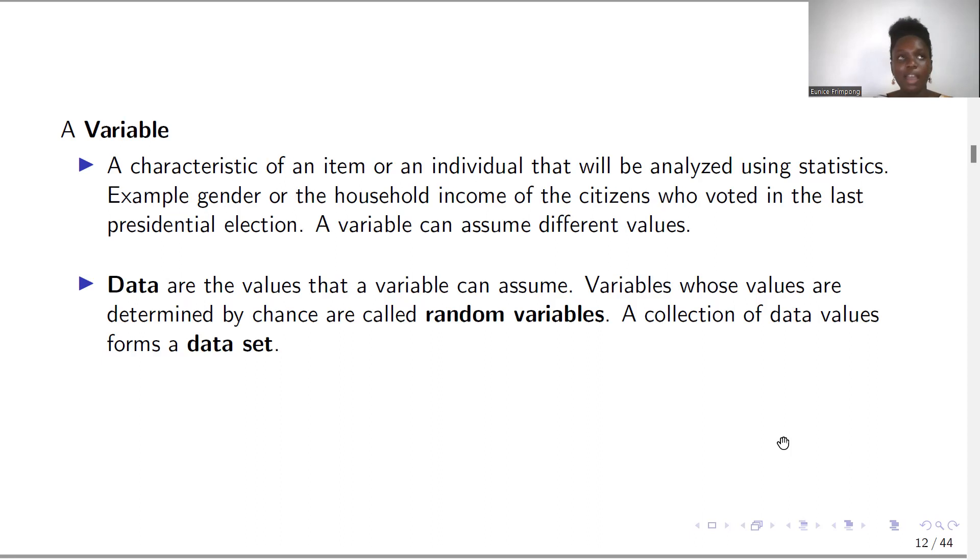So a variable can take on varied values because if I take an individual, his age can be anything. His age can be between 0 and 120. If I'm looking at children and I pick an individual, that person's age could be between 1 and 10. So variables can assume varied values. We cannot know unless we have asked the question or conducted the research and gotten the results.